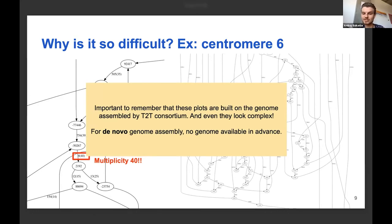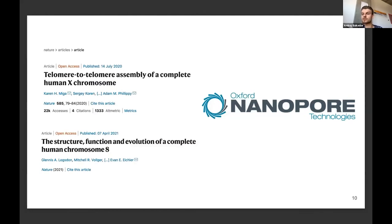If you zoom out to a larger part of that graph, each vertex is 5,000 base pairs, and these plots were built from genomes already assembled by the T2T consortium — they still look complex. When doing de novo genome assembly, there is no genome available in advance, and reads can contain errors. However, when long reads were introduced they created a revolution — Oxford Nanopore technologies produce ultra-long reads sometimes surpassing one megabase pair in length, enabling the assembly of two complete gapless human chromosomes: chromosome X last year and chromosome 8 three weeks ago.